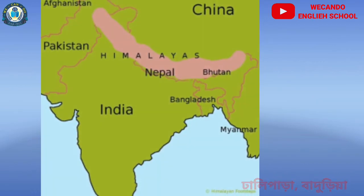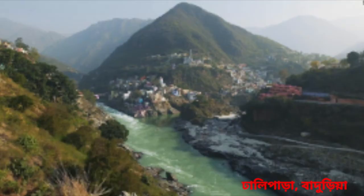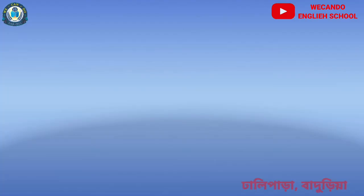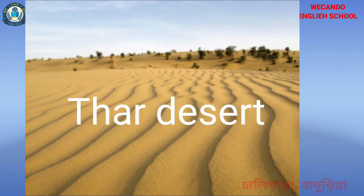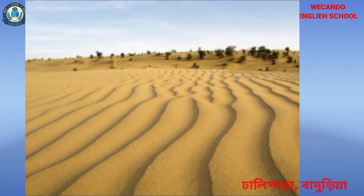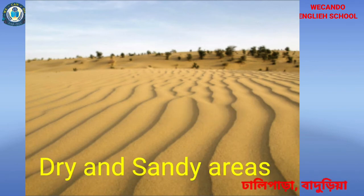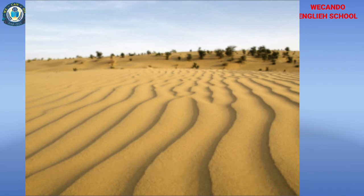The Himalayas form the northern boundary between India and China. There are many rivers that have their sources in these mountains. The great Indian desert, also known as the Thar desert, is in the northwestern part of India. These are very dry and sandy areas which receive very little rainfall throughout the whole year.